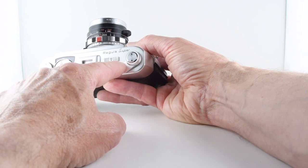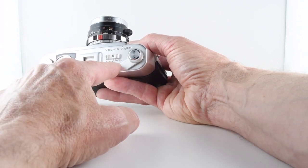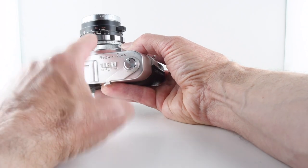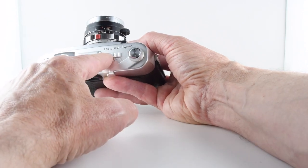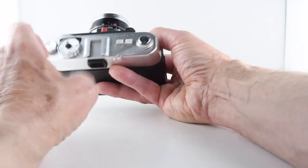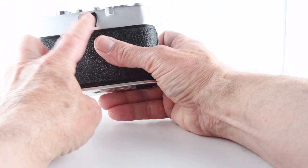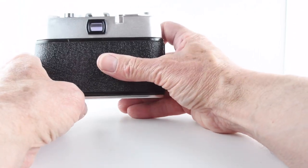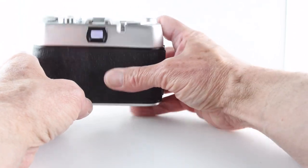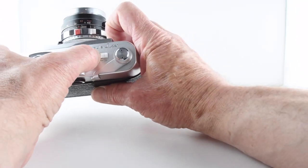On the dial here we have 90, 50, and 135 millimeter lenses. Depending on what lens we put on the camera, if we move it to that particular lens, it will give us a series of grid lines through the viewfinder that correspond to that particular focal length. That's a nice little feature I've not seen on any of the cameras I've used so far.